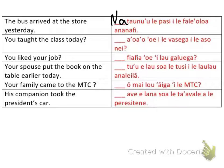Next: 'You taught the class today.' Can I determine exactly when this happened in the past? Today is a long time — it's not a specific moment. It's clear it's in the past, so I use 'sa' or 'na,' but since 'today' is not a specific time, this is the indeterminate past. So I would use 'sa': sa ao a oi ile vasenga ile asone.